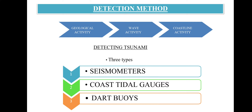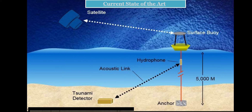Detection methods for tsunami warning systems use three types of technologies: seismometers, coastal tidal gauges, and DART buoys in the mid-ocean. The buoy — a yellow floating material — is attached to the ocean bottom by a rope or similar material. If the ocean water level rises, the hydrophone spring comes up. The tsunami detector then sends waves and signals to the coastal line offices.